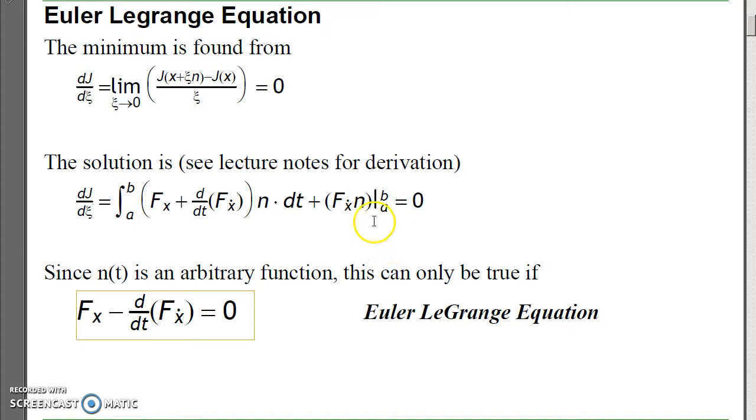The second term are your endpoint constraints. If the endpoint is fixed, that means eta of A equals zero, eta of B equals zero. So I don't have to worry about this. If the endpoint is free, meaning I can deviate from that path at the endpoint, that means this term right here, partial F with respect to x dot, must be zero.